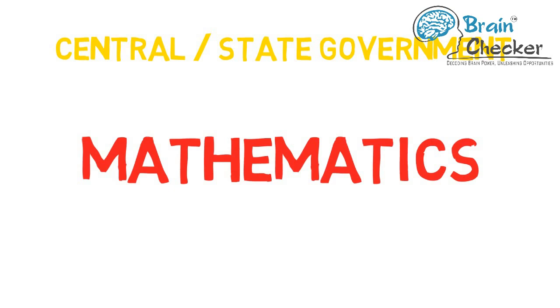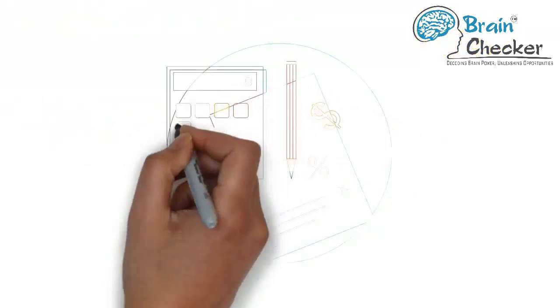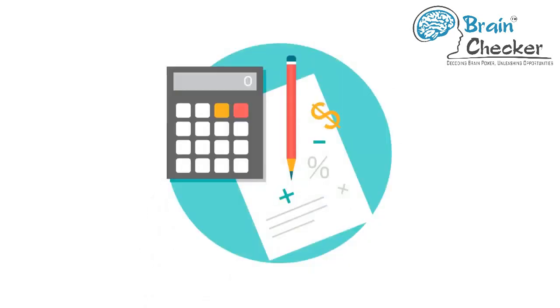Mathematics is a compulsory subject for this as well. For B.Arch and B.Planning, candidates need to have mathematics as a compulsory subject with at least 50 percent marks in aggregate at 10 plus 2 level.